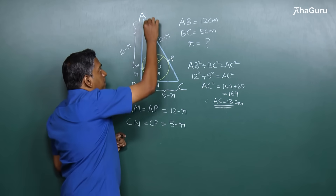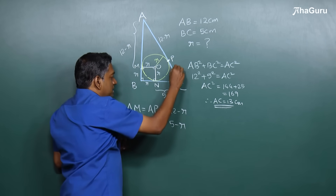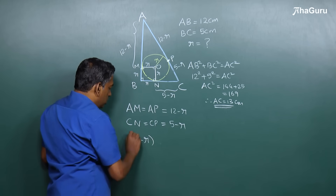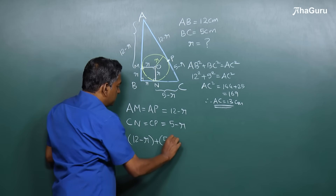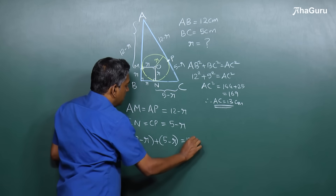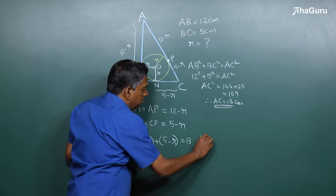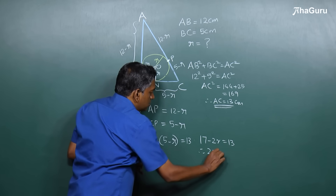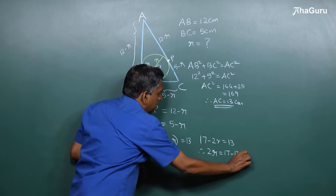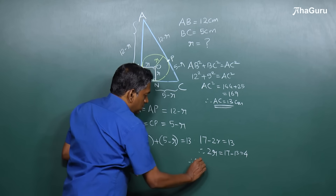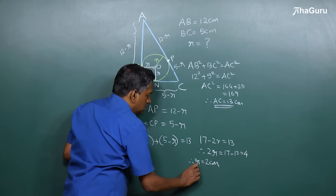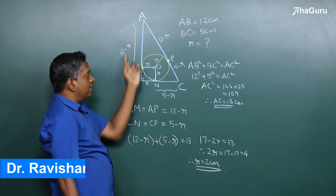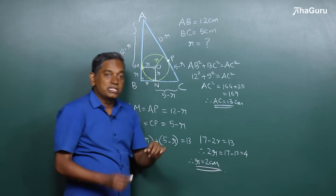We already found AP to be 12 minus R and CP to be 5 minus R. Adding the two: 12 minus R plus 5 minus R equals 13, giving us 17 minus 2R equals 13. So 2R equals 4, therefore R equals 2 centimeters. The radius of the circle inscribed inside this right angle triangle is 2 centimeters.